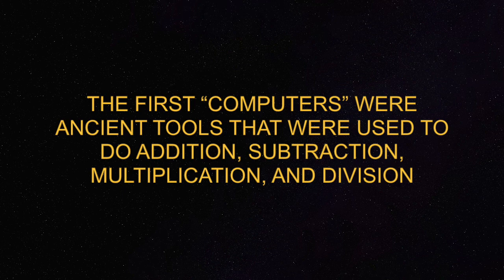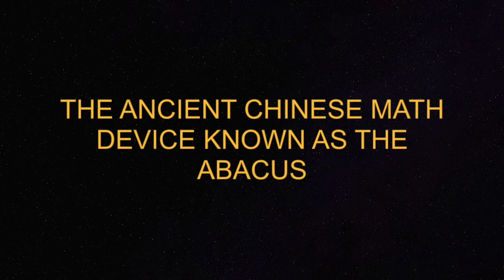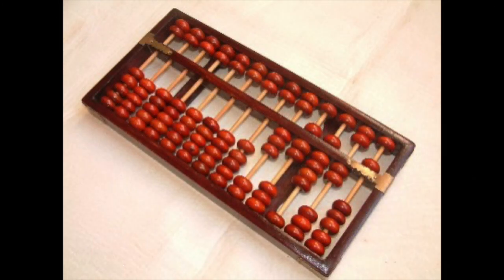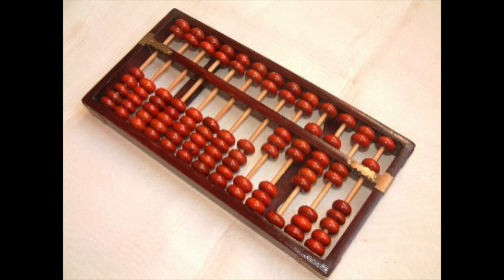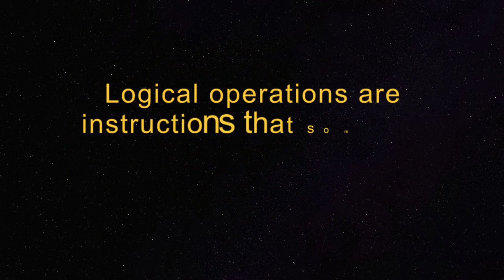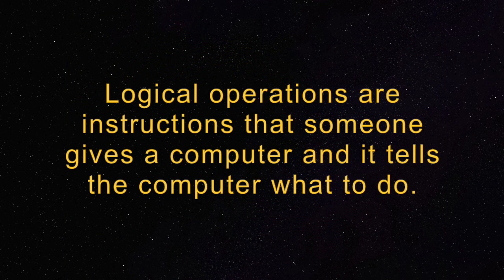The first computers were ancient tools that were used to do addition, subtraction, multiplication, and division. Some early examples of this would be the ancient Chinese math device known as the abacus. These older tools were in some way computers because they did what computers do: take information and turn it into logical operations. Logical operations are instructions that someone gives a computer and it tells the computer what to do. Older tools still required humans to do things to make them work, but modern computers use power and are able to be programmed to do things automatically.